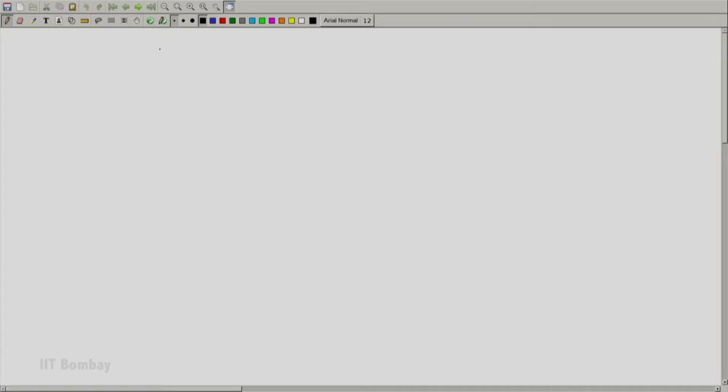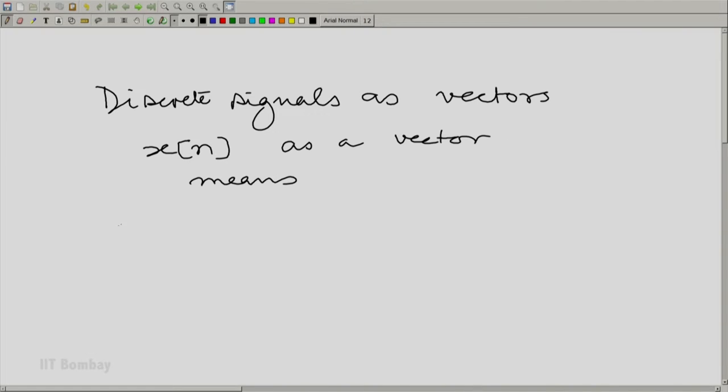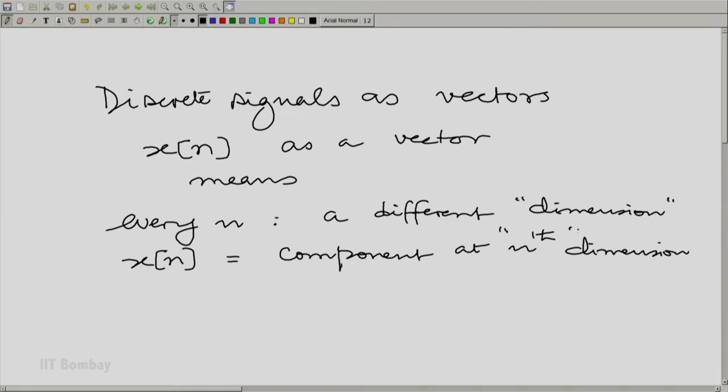Now, what we do for discrete variable signals? We treated each value of the independent variable or each integer as a different dimension. So let us make that clear, let us make that formal. Discrete signals as vectors. x(n) as a vector means every n is a different dimension, and x of n is the component at the nth dimension.